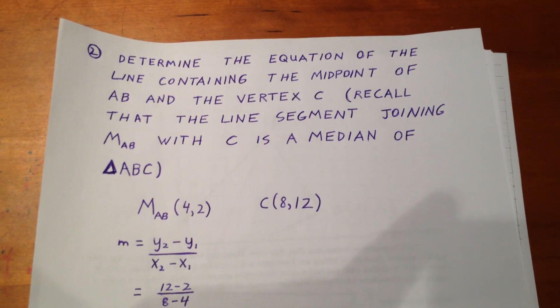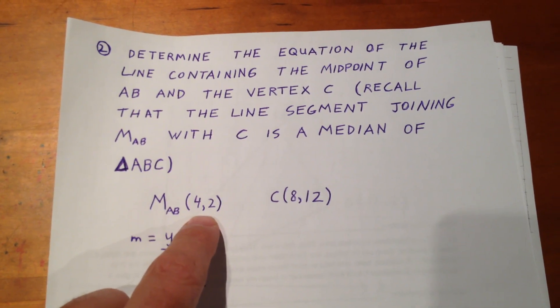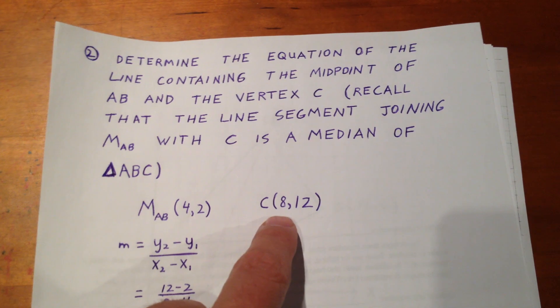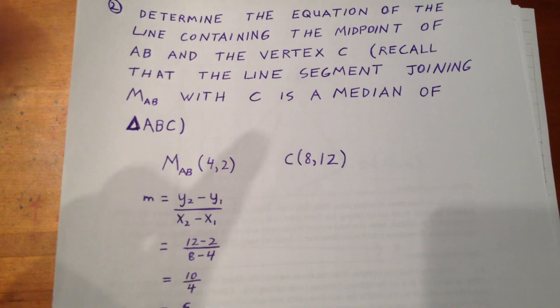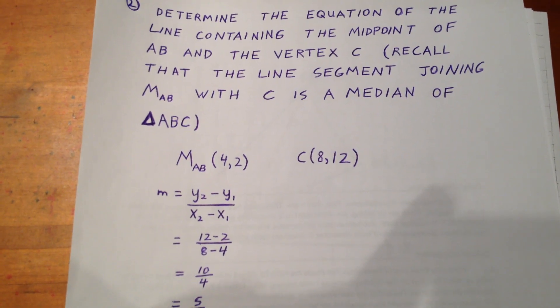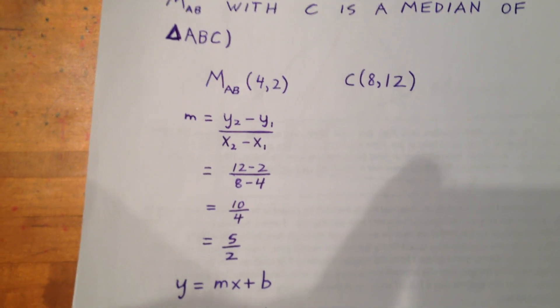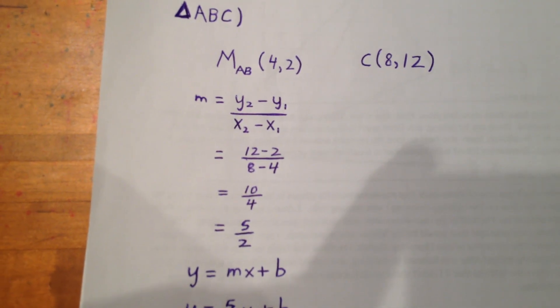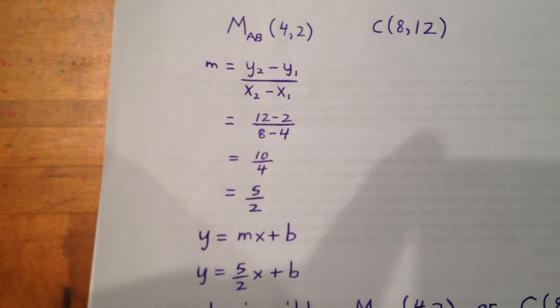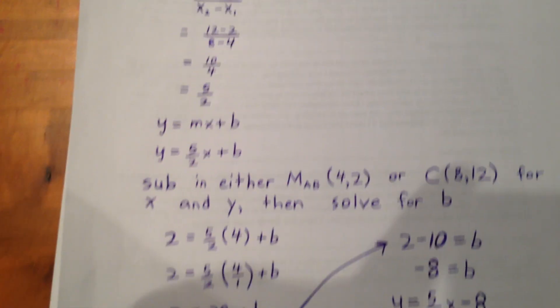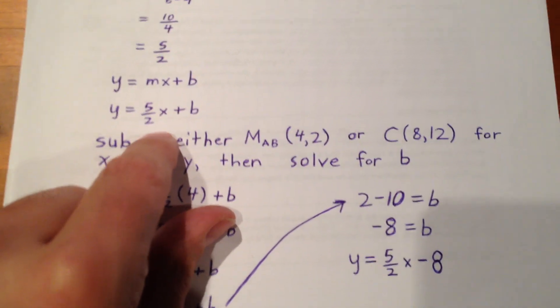So, we first of all go from the midpoint, 4, 2, to the far vertex, which in this case is 8, 12. We determine our slope using the slope formula, y2 minus y1 over x2 minus x1. And that's 12 minus 2 over 8 minus 4, which is equal to 5 over 2. We know that the equation of the line will be y equals mx plus b, and since the slope is 5 halves, we know that the equation of the line is y equals 5 halves x plus b.